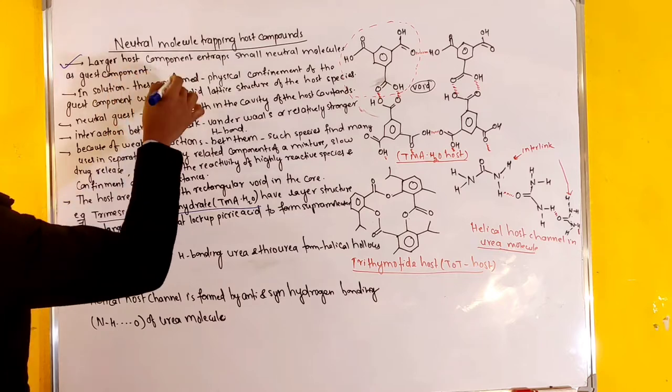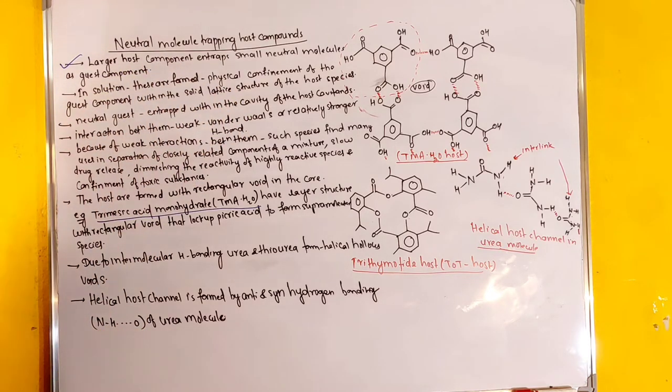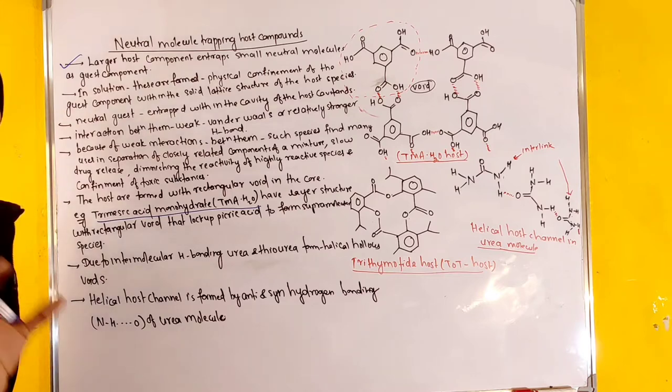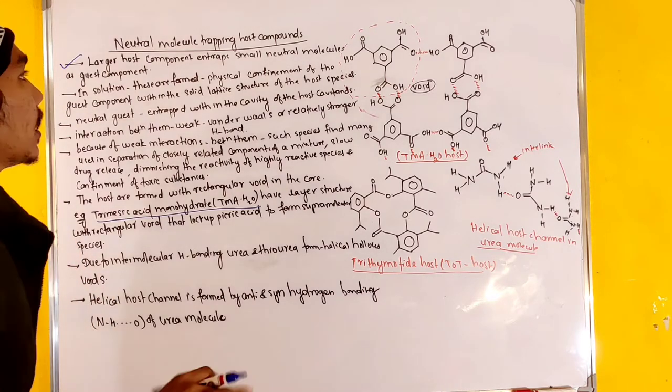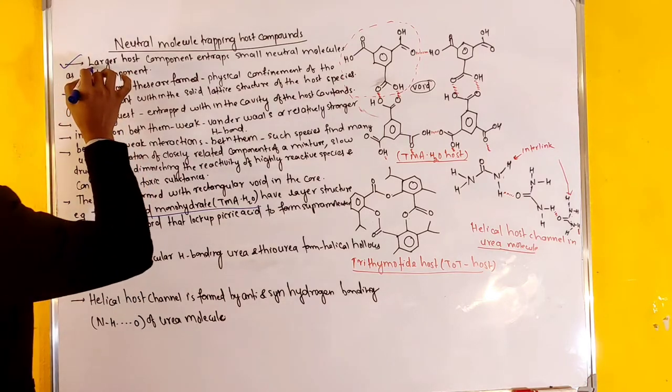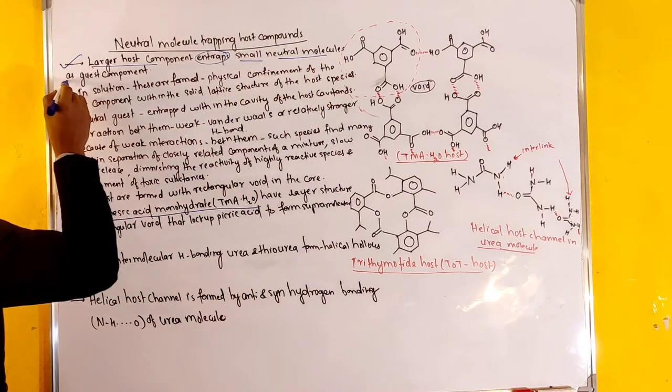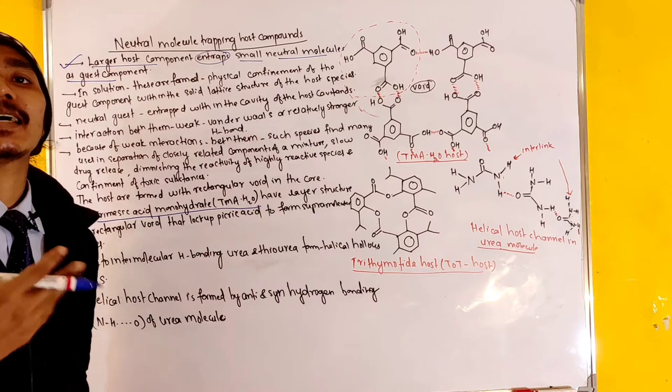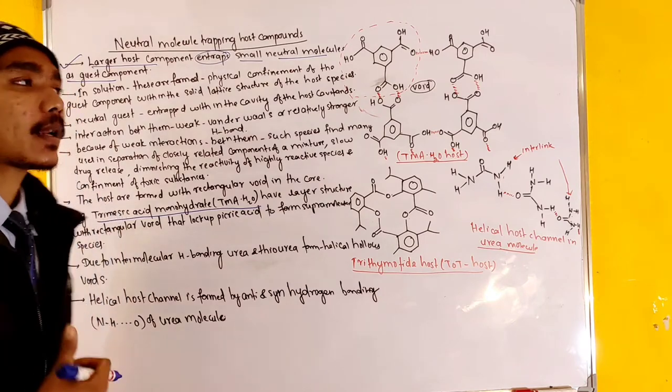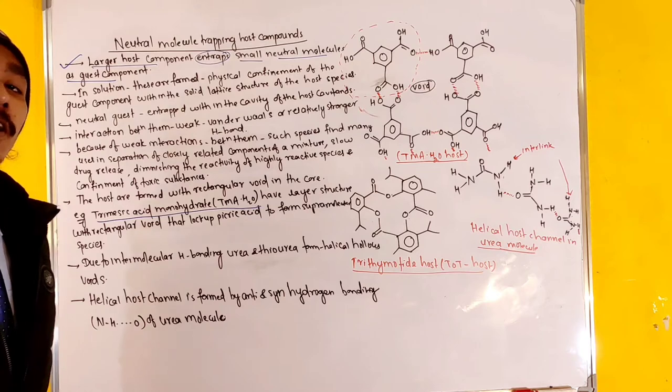First point: the larger host components entrap smaller neutral molecules as a guest component. This is host-guest complex family, host-guest chemistry. Larger host component traps smaller neutral molecules as a guest. You've got a guest group trapped.